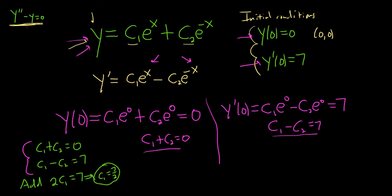Good stuff. Well, if c1 is 7 halves, when you plug it in here, you get 7 halves plus c2, and that's equal to 0. So c2 is equal to negative 7 halves.